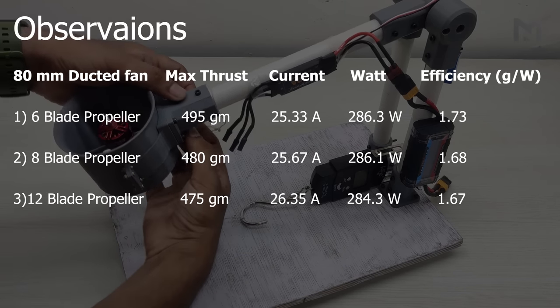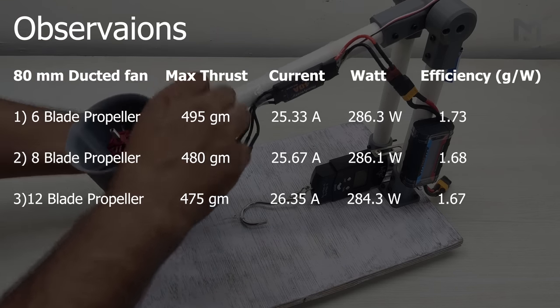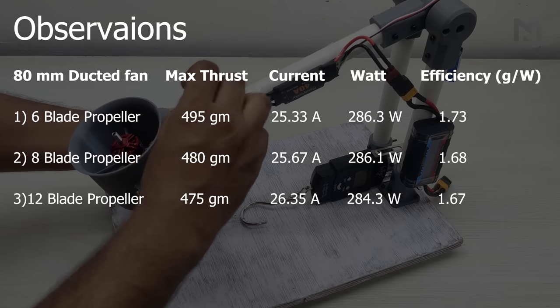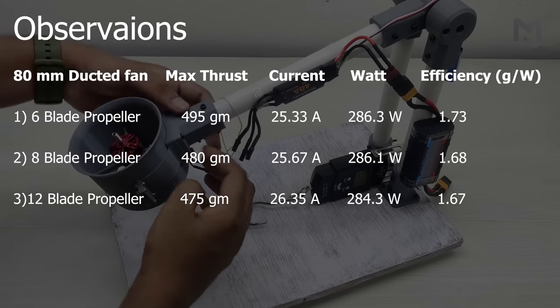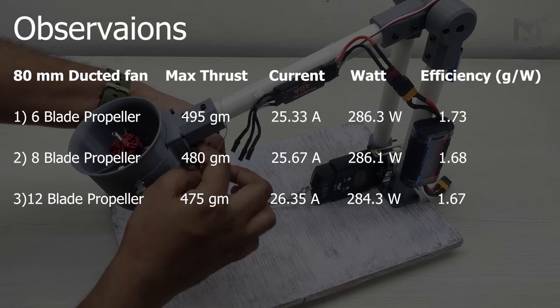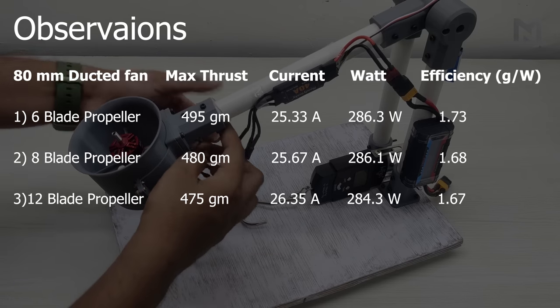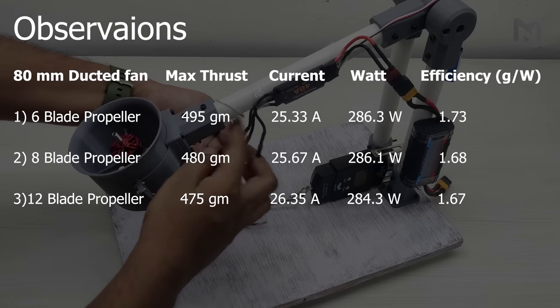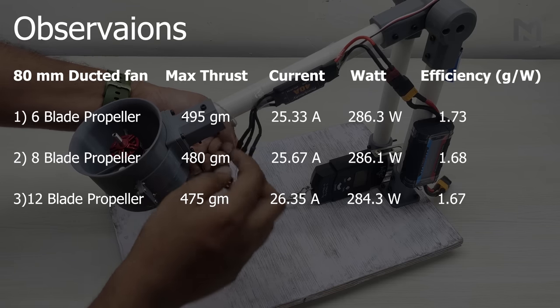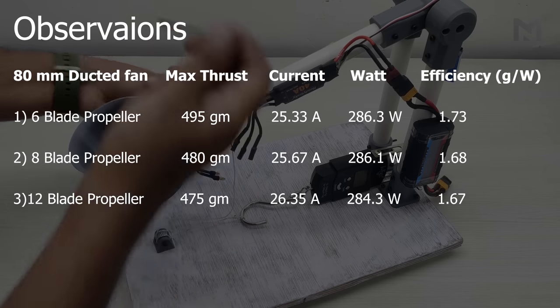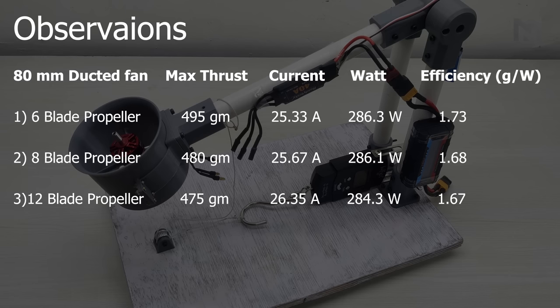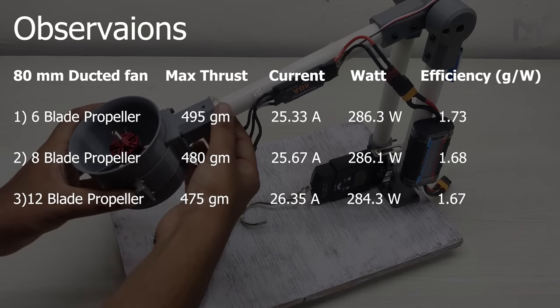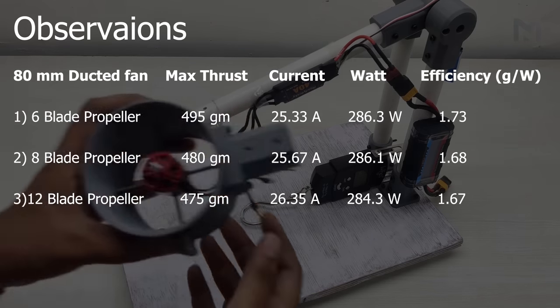This means that on increasing the number of blades, the torque requirement of the EDF increases and the current consumption of the motor increases, which leads to lower efficiency. We can conclude that the six-blade propeller produces maximum thrust at an efficiency of 1.73, which is neither too low nor too high for a homemade EDF. Keeping that in mind, the motor which I have used has very high RPM but low torque, and EDF requires a high torque motor.